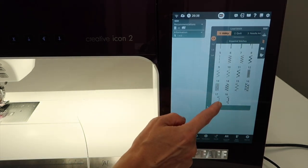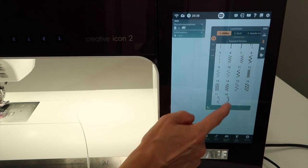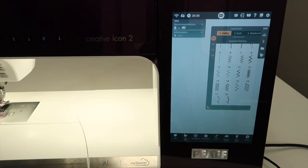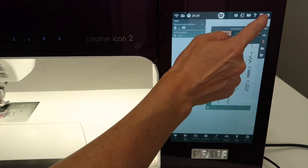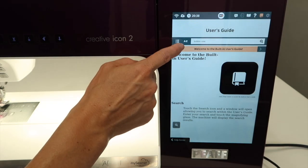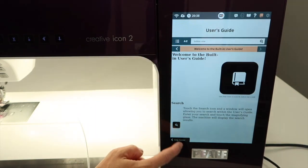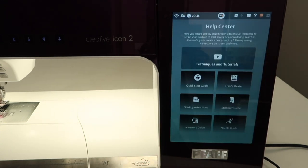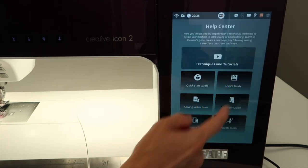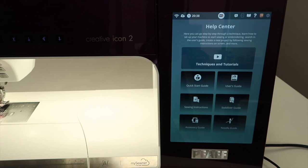Your blind hem stitches is stitch number 17 and 18. If you did not know that, come up to the little picture of a book at the top and let's come back out to the help center. You can go ahead and look in the user's guide, type in blind hem.